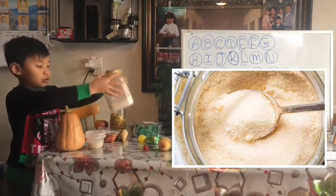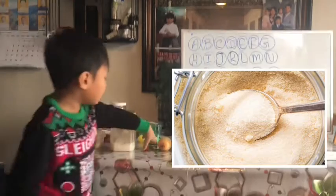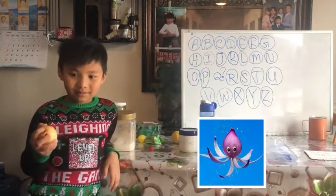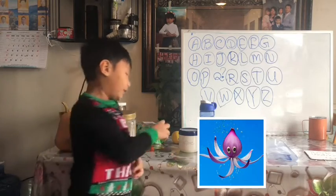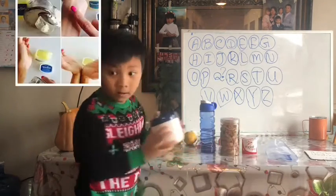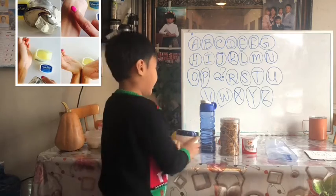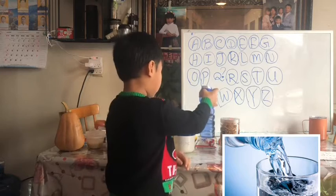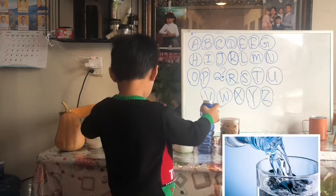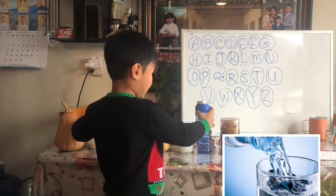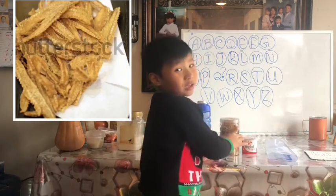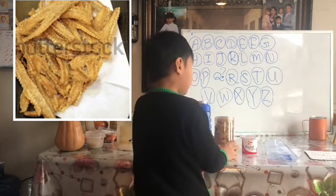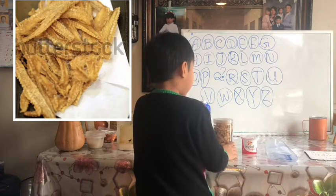S is for sugar, T is for tomato, U is for onion, V is for lentilin, W is for water, X is for x-ray fish.